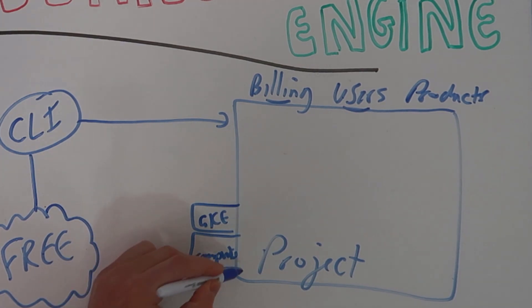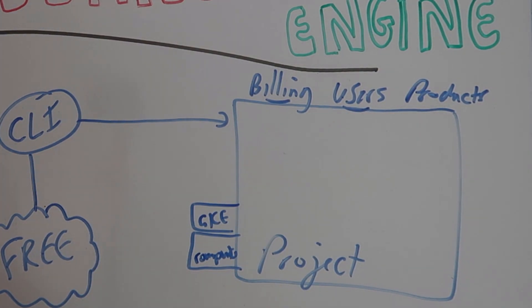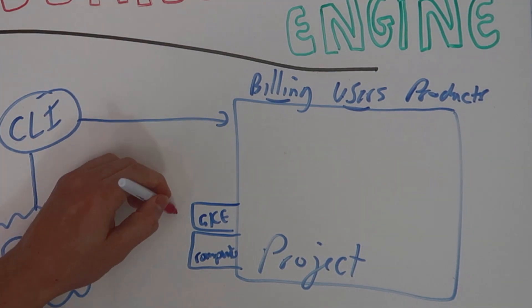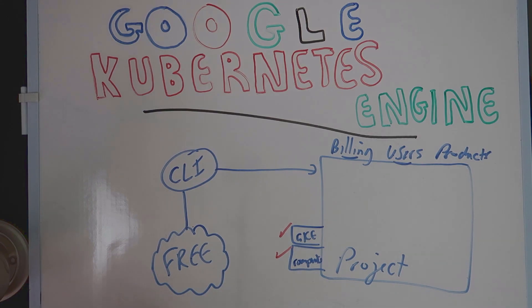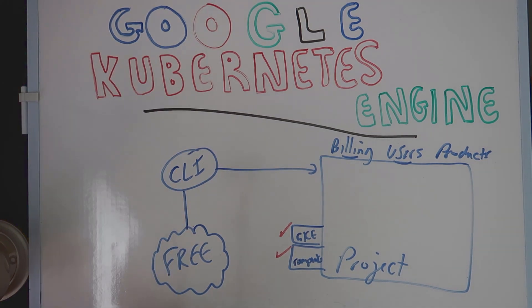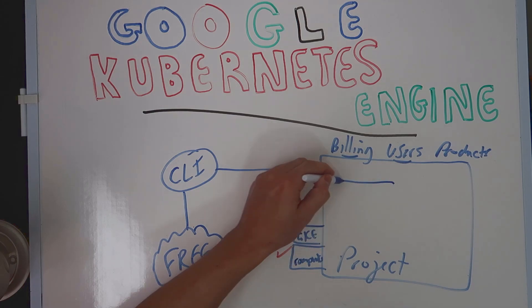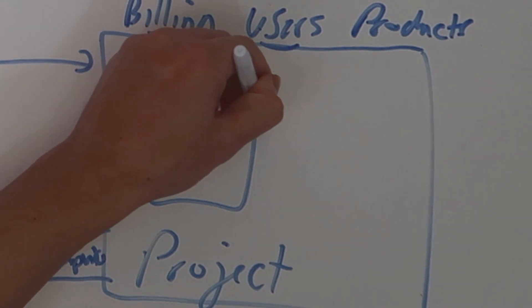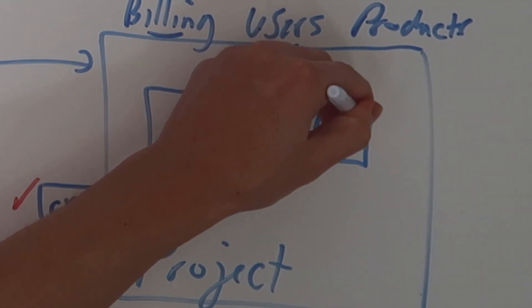So what we need to do is enable those APIs — we're going to enable GKE and the Compute API. Then we're going to use the CLI to spin up a Kubernetes cluster inside this project, and we're also going to create one virtual machine worker node for our project.